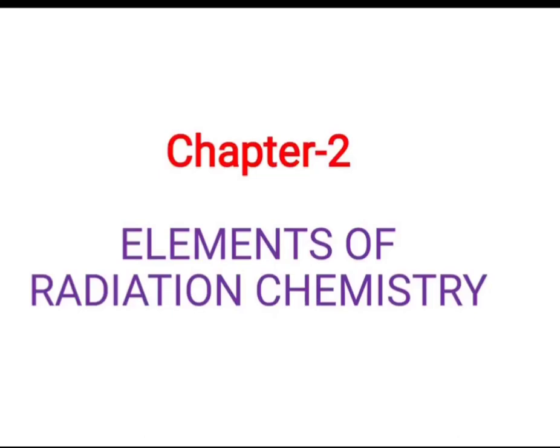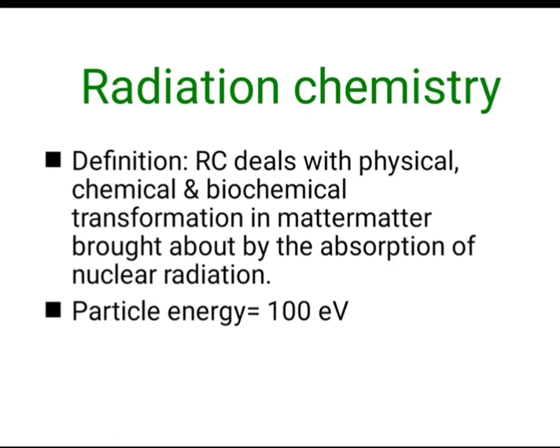Hello everyone, today we are going to see the new chapter from nuclear and radiation chemistry. The chapter heading is 'Elements of Radiation Chemistry.' We will first see the definition of radiation chemistry. Radiation chemistry deals with the physical, chemical, and biochemical transformation in matter brought about by the absorption of nuclear radiation.